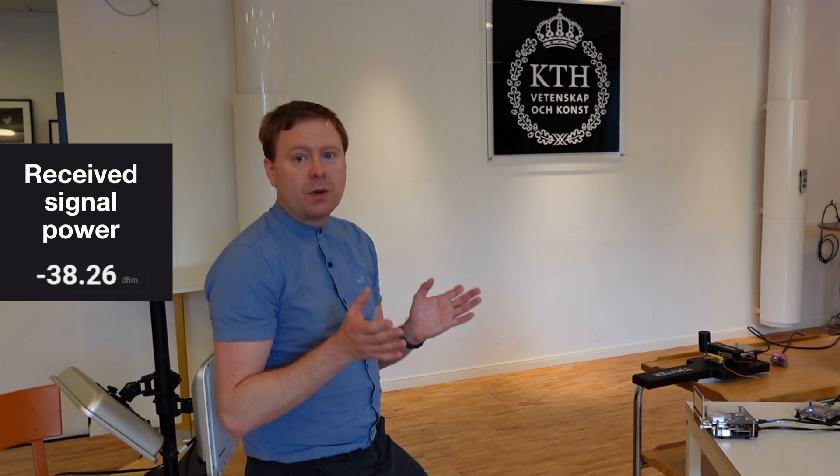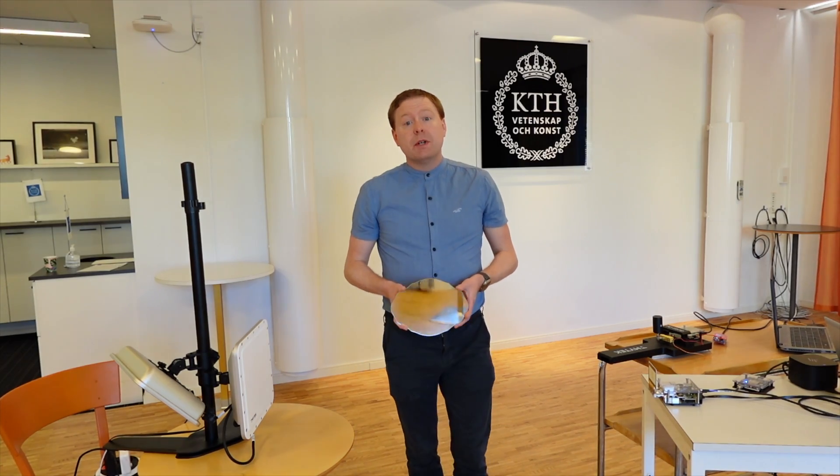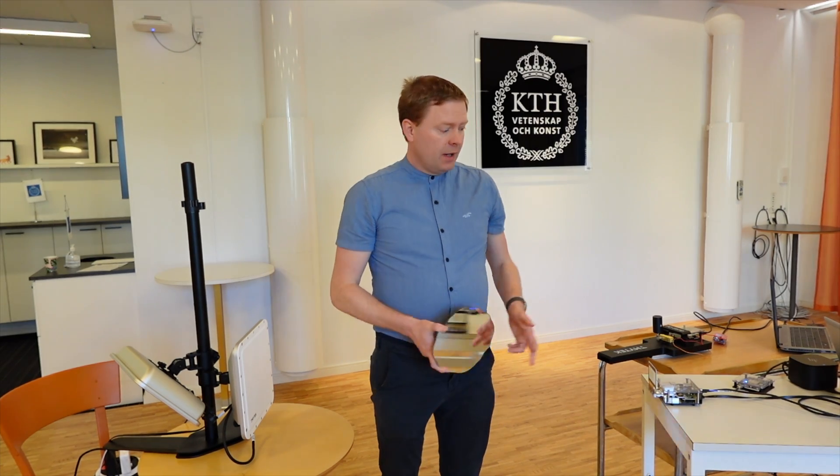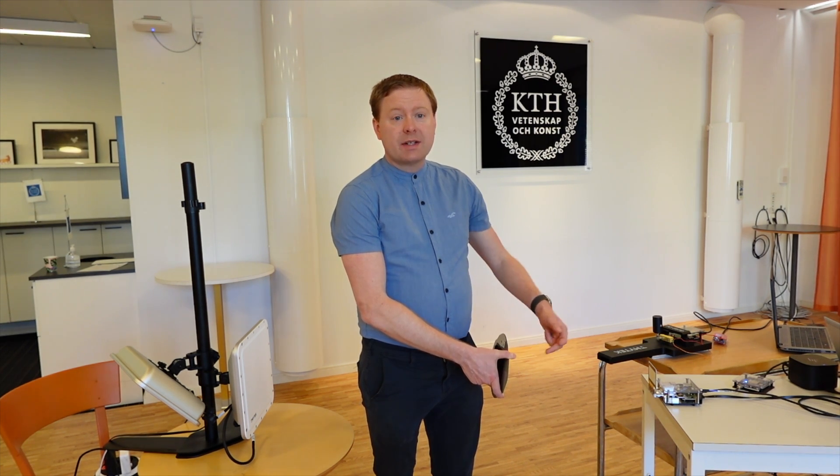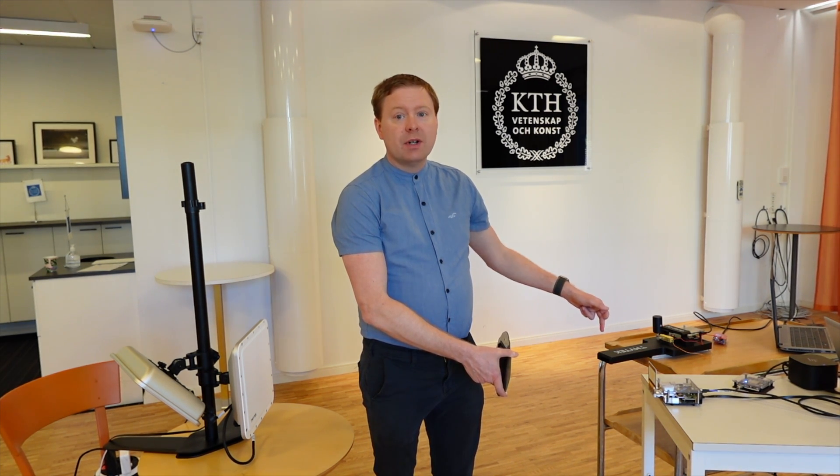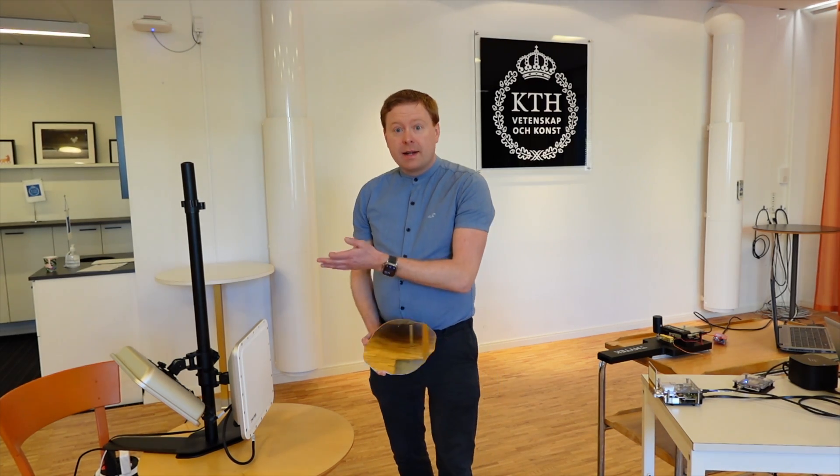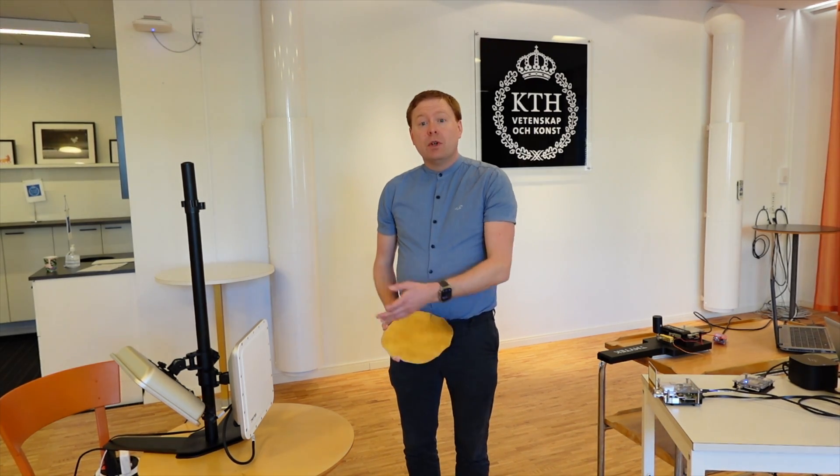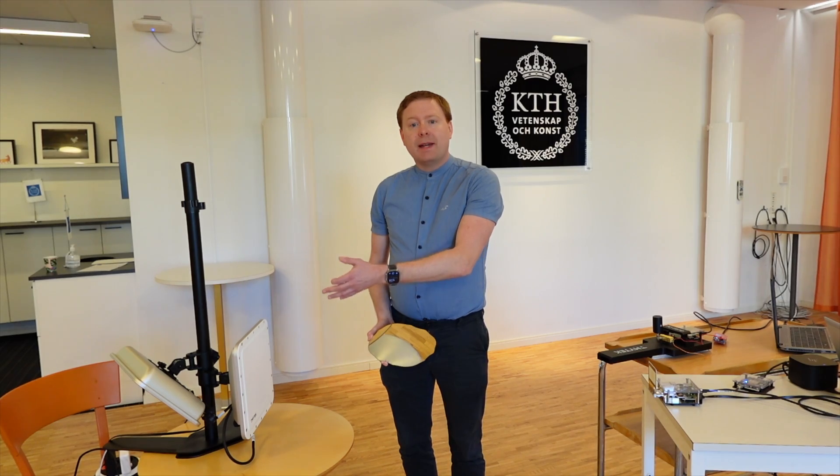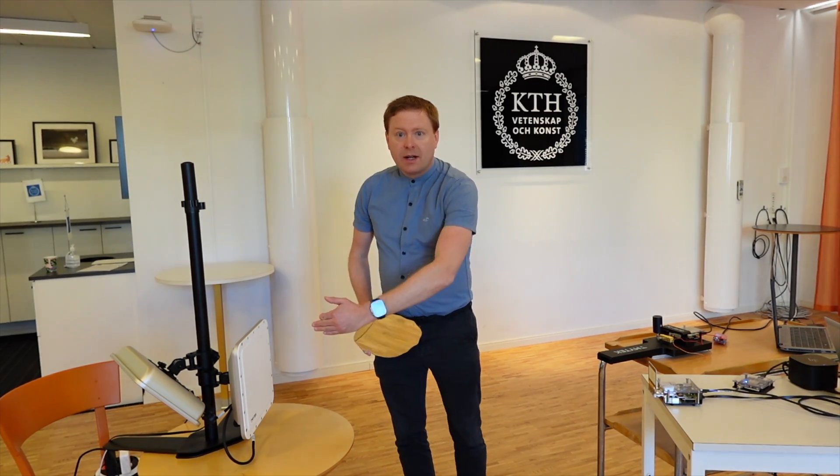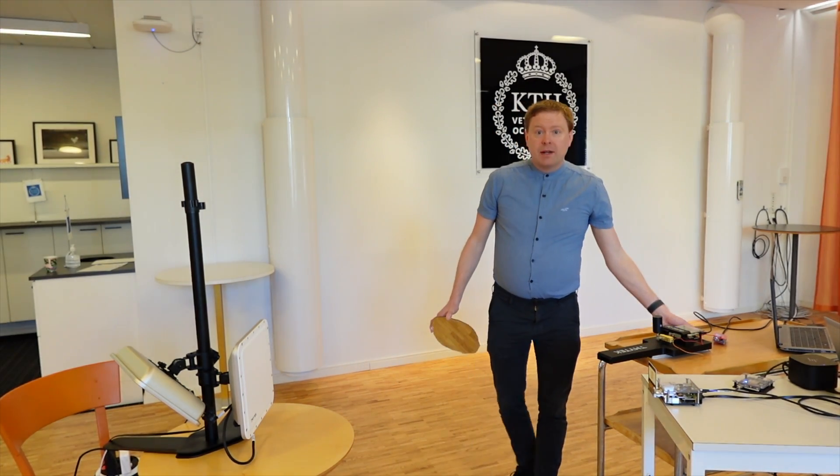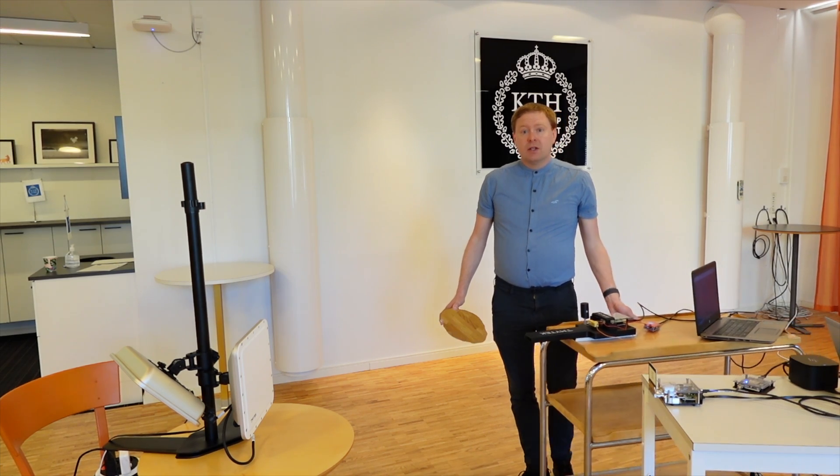A normal mirror can also be used to reflect wireless signals from the transmitter to the receiver. But if you place it like this, then you will have to rotate it in the right way in order to make sure that the signal is actually going into the receiver and not somewhere else. It's kind of hard to rotate it mechanically like this depending on where the receiver is located, while a RIS is able to change its configuration without moving mechanically so that it steers the direction of the reflected signal depending on where you place your receiver.